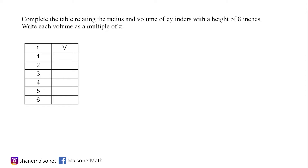Write each volume as a multiple of pi. When they say write each volume as a multiple of pi, that just means that we have to solve in terms of pi, meaning we do not substitute pi with 3.14 — we leave it as a symbol. Let us start with the formula that will give us the volume of a cylinder, which is equal to pi times radius squared times the height. They want us to use different inputs for the radius, but continually use 8 inches for the height.